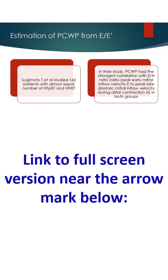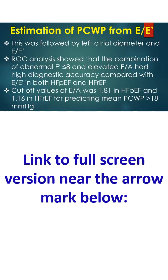Sugimoto and colleagues studied 165 patients with almost equal numbers of heart failure with preserved ejection fraction and heart failure with reduced ejection fraction. In their study, PCWP had the strongest correlation with E/A ratio in both groups. This was followed by left atrial diameter and E.